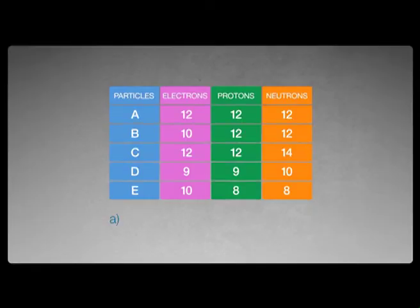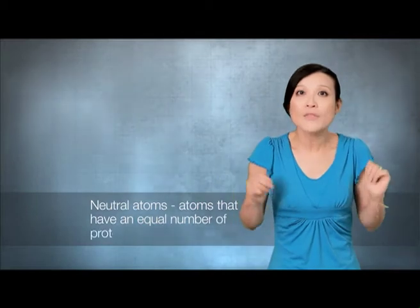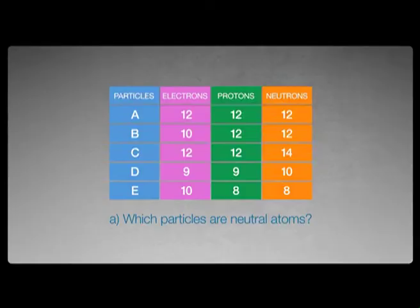Okay, question time. Look at this table that describes some particles. Question A: which particles are neutral atoms? Neutral atoms are atoms that have an equal number of protons and electrons. So the answer is particles A, C and D.